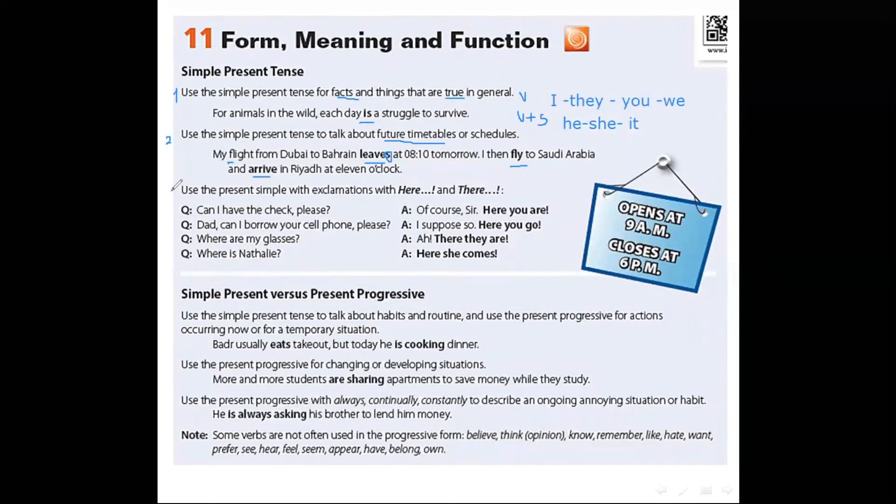What about the third usage for the simple present tense? Use the simple present with exclamations with here and there. Can I have the check please? Of course, sir. Here you are. Here we use the simple present tense for verb to have. Dad, can I borrow your cell phone please? I suppose so. Here you are. Where are my glasses? Aha, there they are. Where is Nathalia? Here she comes.